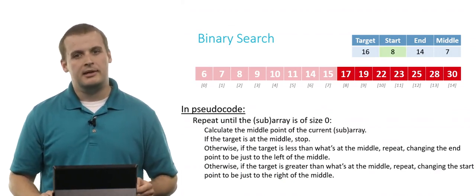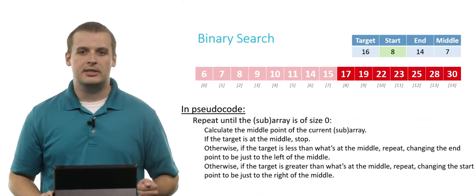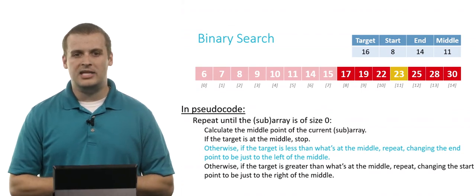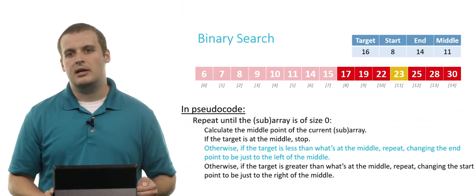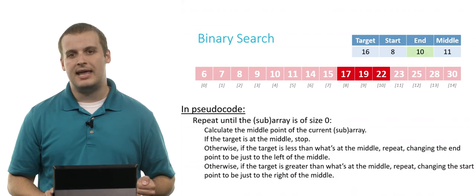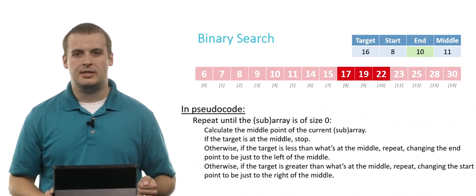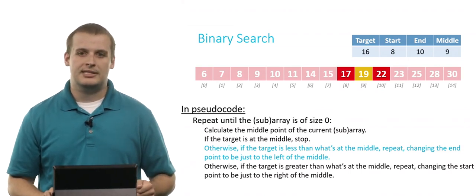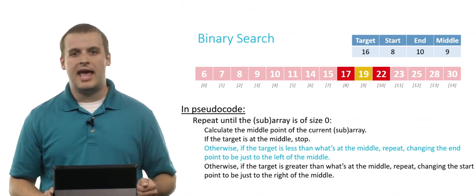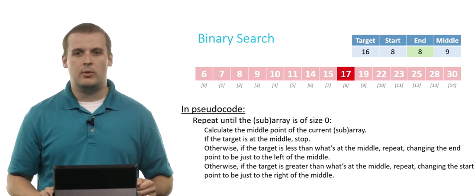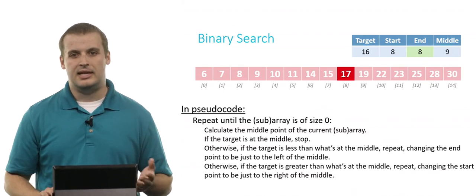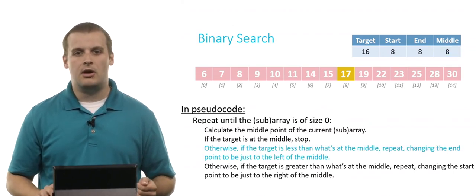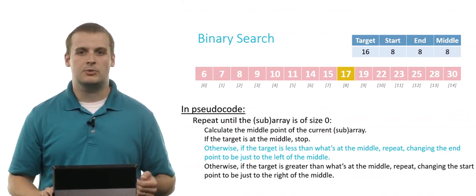We calculate the new midpoint: 8 plus 14 is 22, divided by 2 is 11. Is 23 what we're looking for? No — we need something less, so we change the endpoint to 10. Calculate again: 8 plus 10 divided by 2 is 9. Is 19 what we're looking for? No — we change the endpoint to 8. Now we're looking at a single element. The midpoint is 8. Is 17 what we're looking for? No, we need 16, so we set the endpoint to 7 — just to the left of the current midpoint.